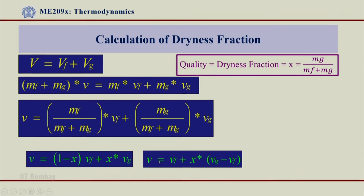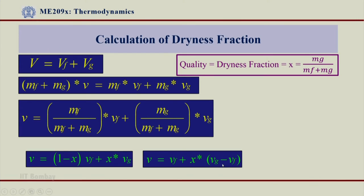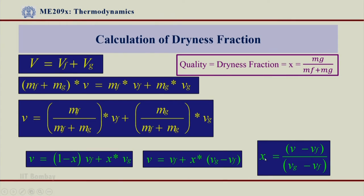So the specific volume of any two-phase mixture at a given pressure and temperature equals the specific volume of saturated liquid at the same pressure and temperature — which can directly be obtained from the steam table — plus x times (Vg minus Vf), also known as delta V or Vfg, both values available from the steam table. And if I rewrite in terms of calculating x, I get the expression: x equals (V minus Vf) divided by (Vg minus Vf).